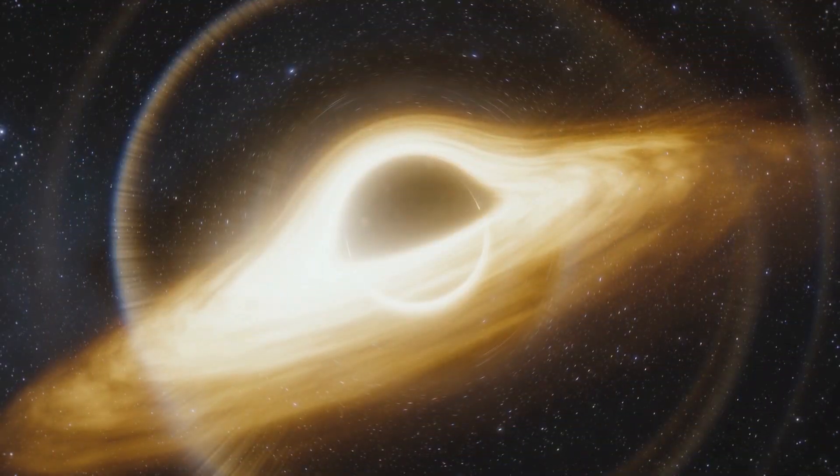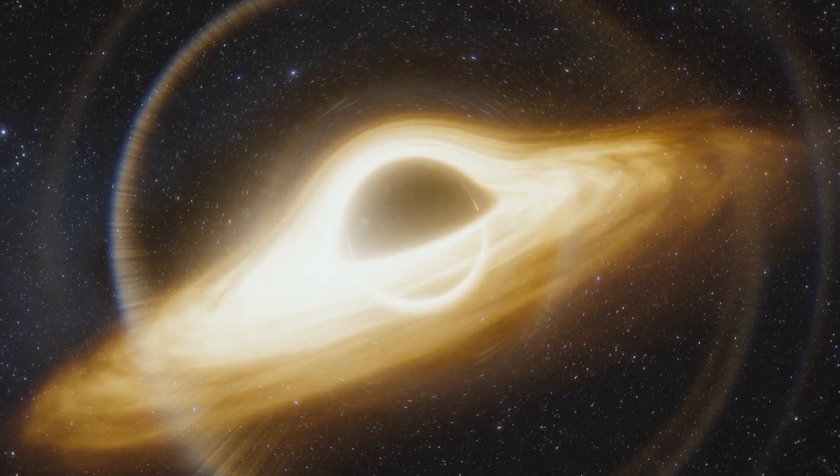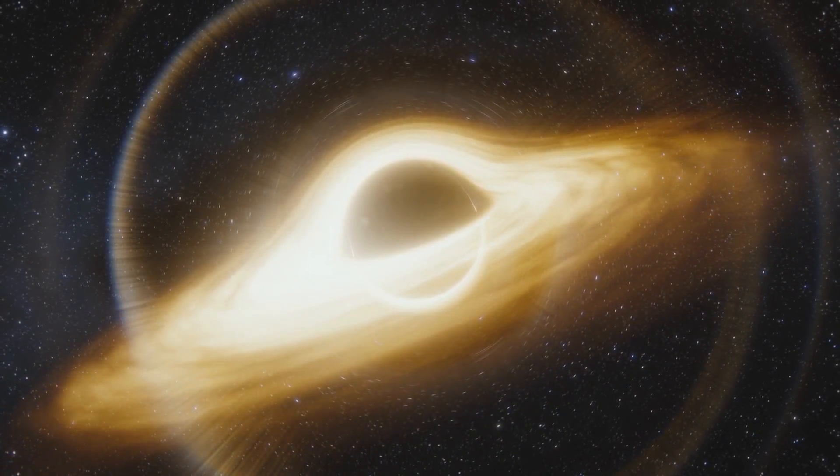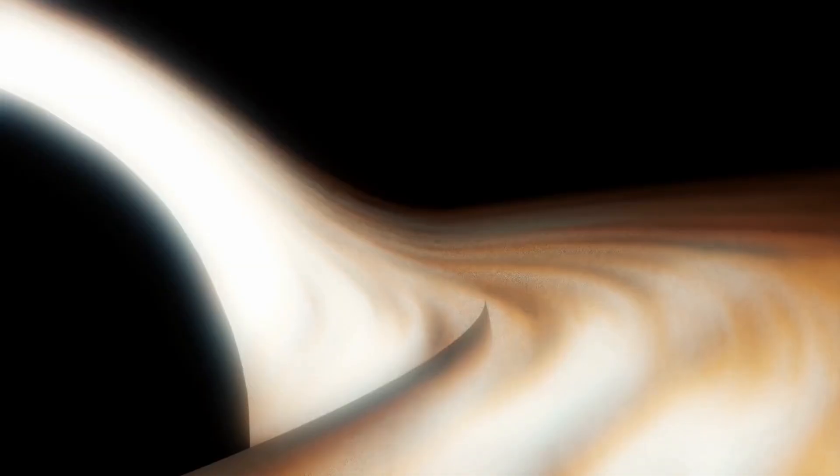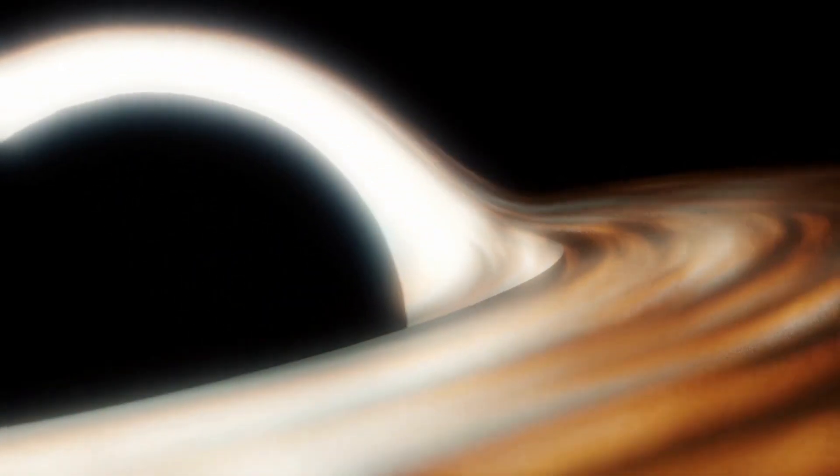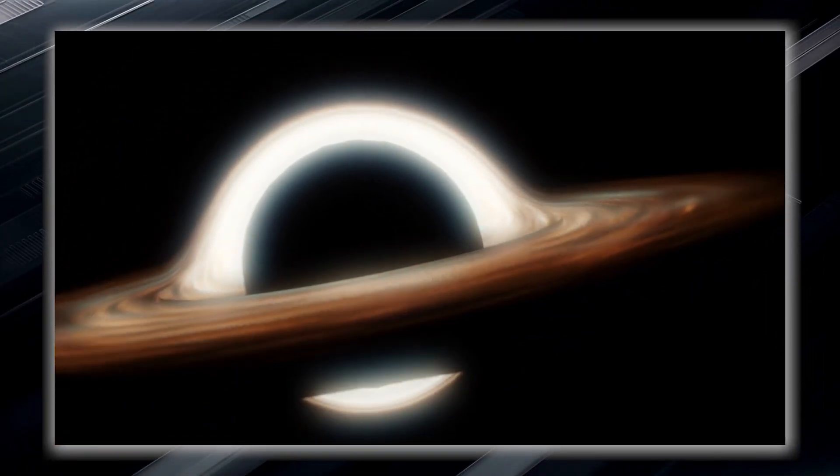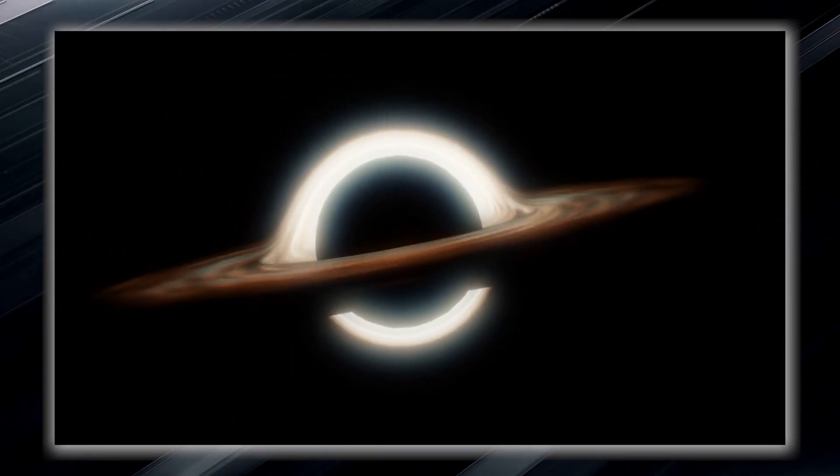This is where things become truly extraordinary. The gravitational pull near a black hole is so incredibly strong that it creates what is known as an event horizon. The event horizon is not a physical barrier, but rather a region where space gradually bends. It is an invisible boundary or point of no return.